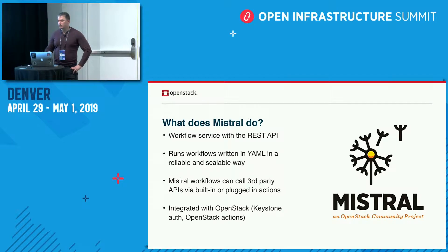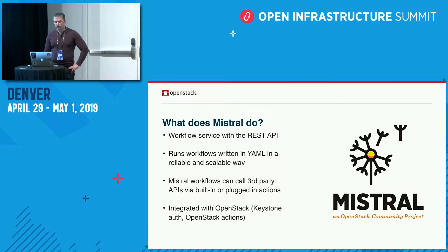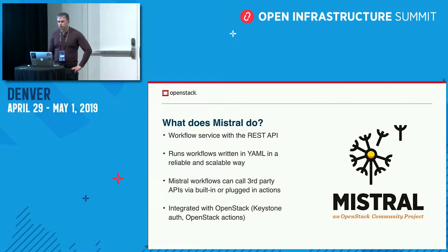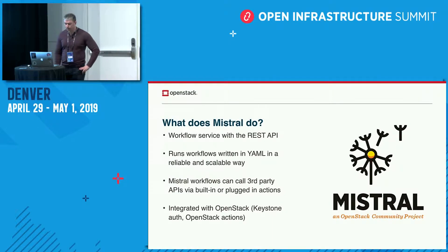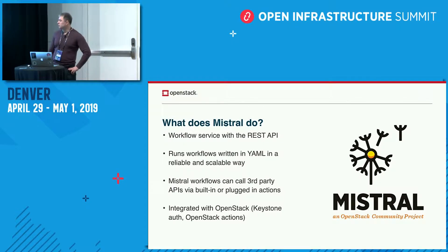Mistral workflows can call any third-party APIs through a mechanism called actions — basically some kind of useful job that the workflow can do at a certain point of execution. Since Mistral was born as part of the bigger OpenStack family, it's tightly integrated with OpenStack. It uses Keystone for authentication and has a number of built-in actions to call OpenStack APIs, covering pretty much all the core projects of OpenStack.